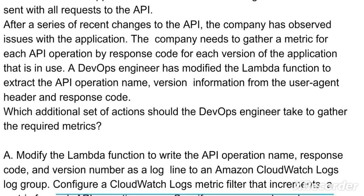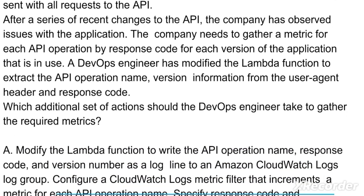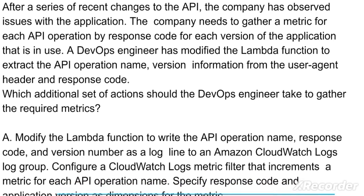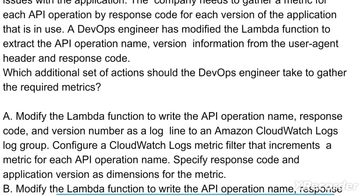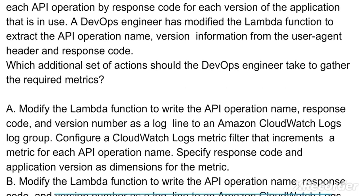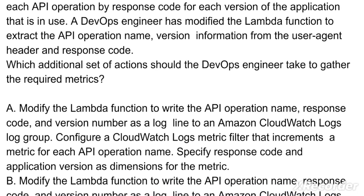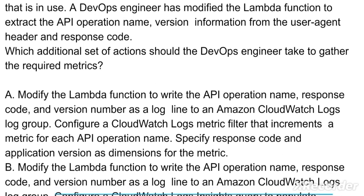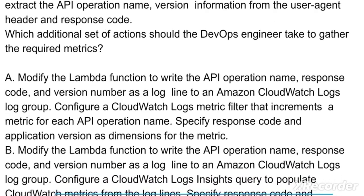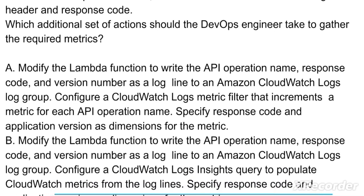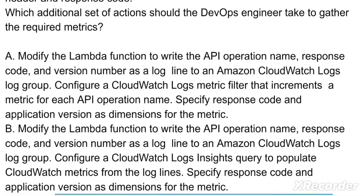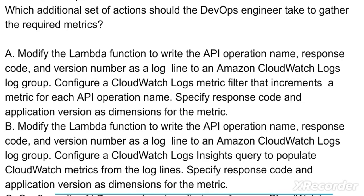Option A: Modify the Lambda function to write the API operation name, response code, and version number as a log line to an Amazon CloudWatch Logs log group. Configure a CloudWatch Logs metric filter that increments a metric for each API operation name. Specify response code and application version as dimensions for the metric.